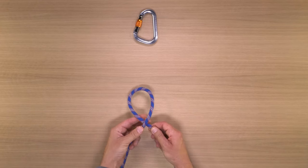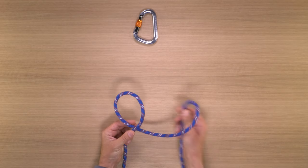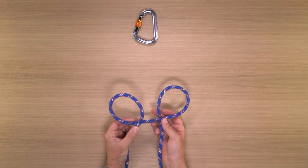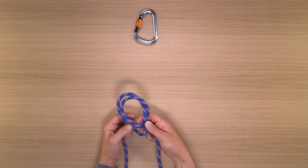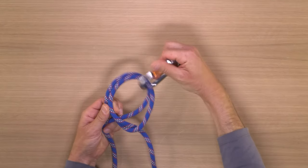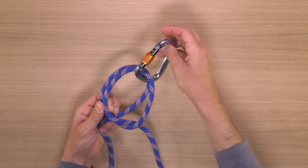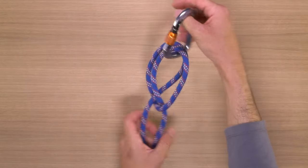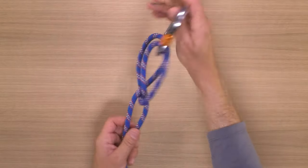To tie a clove hitch, start by making a loop right strand behind left. Then right behind left, make a second loop in the same direction. Pass the second loop in front of the first, and clip a carabiner through both loops. This is a great way to attach your rope to an anchor point, or to tether yourself to the master point of an anchor.